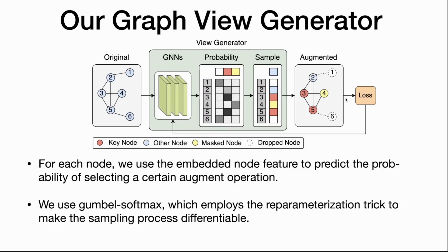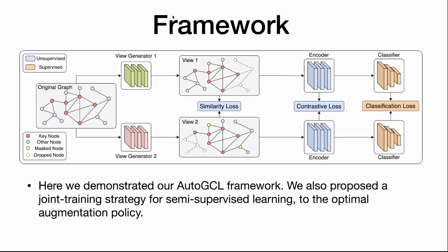Here we demonstrate the structure of our graph view generator. For each node in the original input, we use the embedded node features to predict the probability of selecting a certain augmentation operation, corresponding to columns in our probability matrix. We then use Gumbel Softmax, which employs the reparameterization trick to make the sampling process differentiable, so we can have a differentiable view generator and use backpropagation to optimize it. The original graph is fed into different view generators, which generate different contrastive samples.